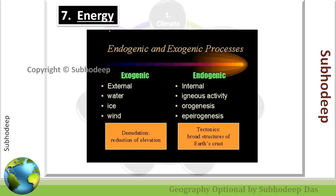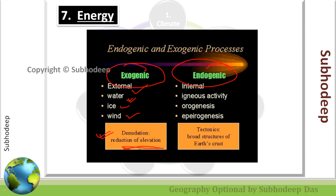The last factor is energy. There are different factors that lead to changes in landforms: the first is exogenic forces and the second is endogenic forces. Exogenic forces are external in nature — like fluvial erosion by water, erosion by ice and glaciers, and aeolian erosion — and these lead to denudation of a particular region, reducing its elevation. Endogenic forces are internal forces that happen due to igneous activities, which lead to orogenesis and the formation of mountains. So endogenic forces are landform-forming processes, while exogenic forces are denudation processes.